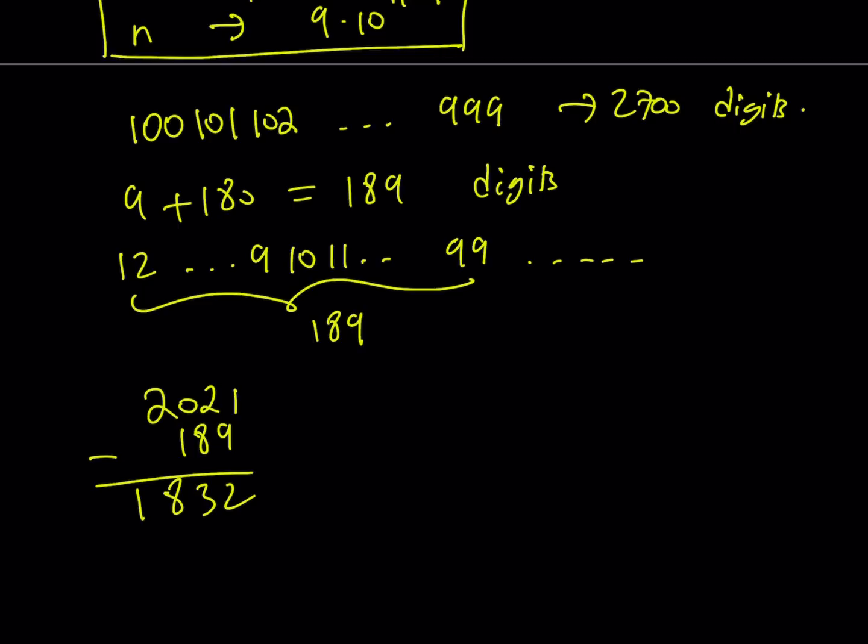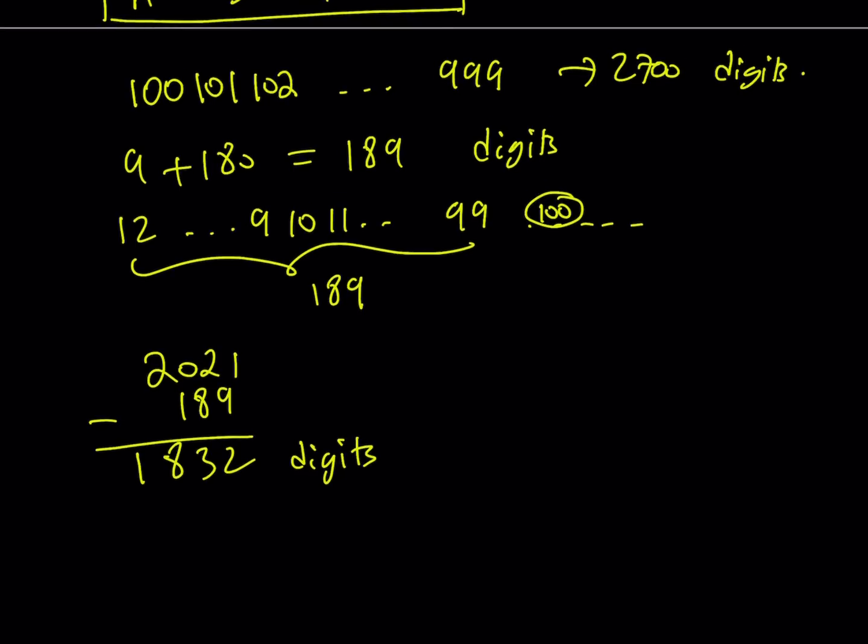And since each number, each of these is a three-digit number, they're going to take up three spaces. So to find out how many three-digit numbers we need to use, let's go ahead and, this is how many digits I need to fill in the space. Let's go ahead and divide by three to find out how many three-digit numbers I have to use. Because each three-digit number takes up three spaces.